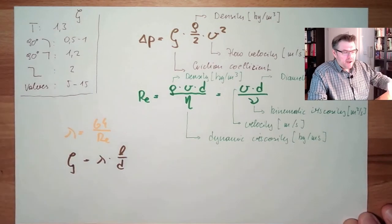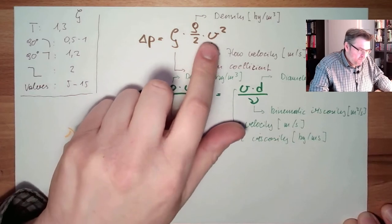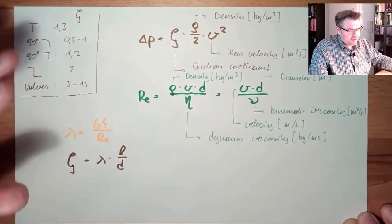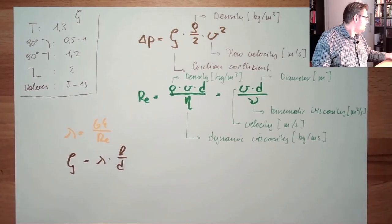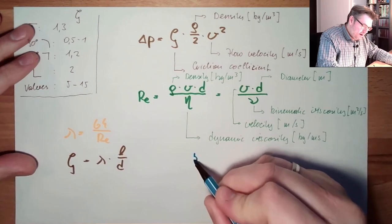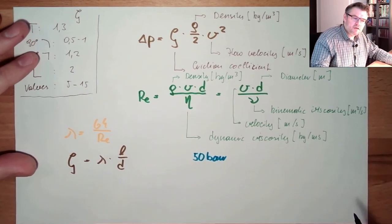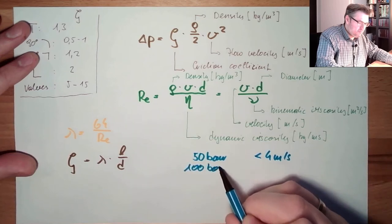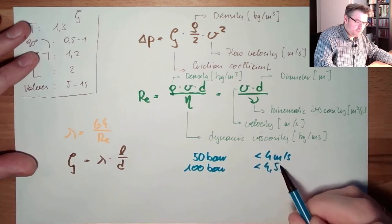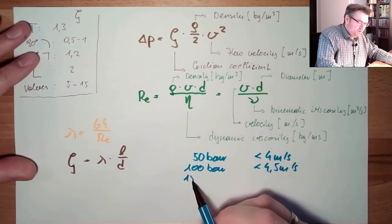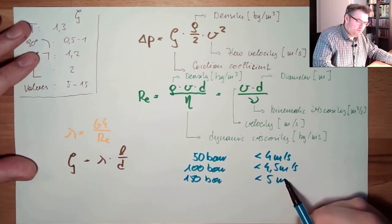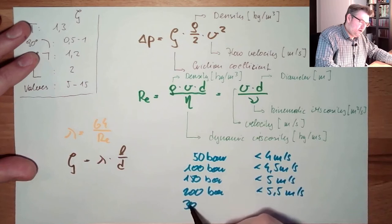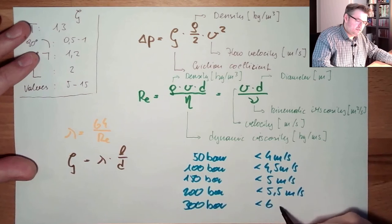Depending on the pressure level, if we are below a certain flow speed, we are in laminar streaming and can calculate the pressure losses. The rule-of-thumb limits are: at a 50-bar system, flow velocity should be lower than 4 m/s; at 100 bar, lower than 4.5 m/s; at 150 bar, lower than 5 m/s; at 200 bar, lower than 5.5 m/s; and at 300 bar, lower than 6 m/s.